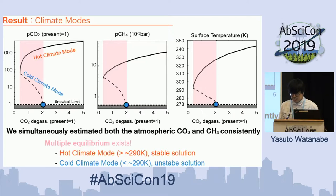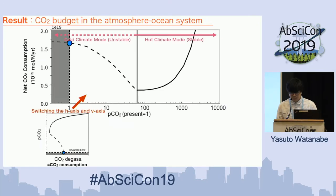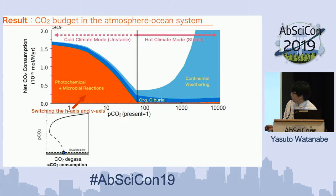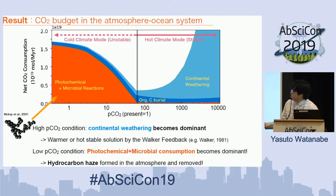Why is the low CO2 condition unstable? To understand this, I examine each item of the CO2 consumption processes. The horizontal axis is CO2 degassing, but at equilibrium it is balanced by CO2 consumption. If we plot the different processes of CO2 consumption, in the hot climate mode the consumption by continental weathering is dominant, which is maintained by the weathering feedback. On the other hand, in the unstable cold climate state, consumption by the coupled system of photochemical reactions and marine microbial reactions is dominant. Associated with this consumption, a hydrocarbon haze — similar to what can be seen in Titan's atmosphere — is formed.